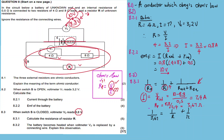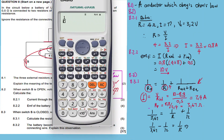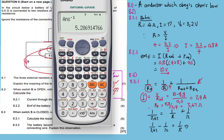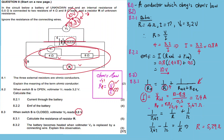Rearranging: 1/R = 1/3.67 − 1/12. Calculating this gives the value of 1/R, and finding the inverse gives R = 5.29 ohm (to two decimal places). You can use the x⁻¹ function on your calculator to find the inverse of the fraction directly.